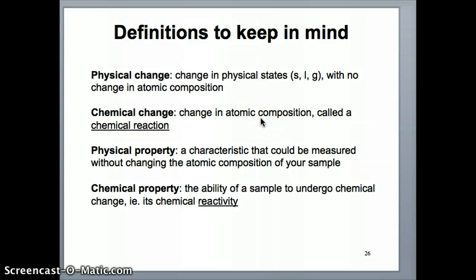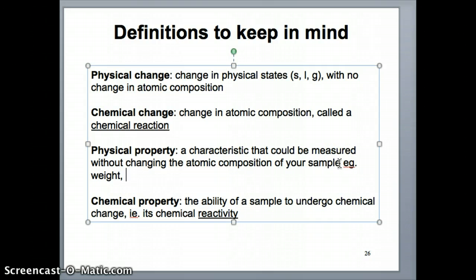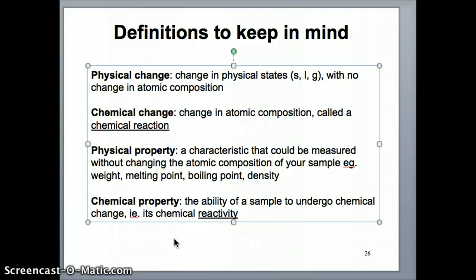We can also talk about physical versus chemical properties. A physical property is a property of a substance that you can measure without changing the atomic composition of the sample itself. For example, mass is something you measure without changing the atomic characteristics of your sample. You can measure its temperature when converting from solid to liquid, which is called the melting point, or the boiling point — the temperature at which the substance converts from liquid to gas. Density is another physical property; when you calculate density you're measuring mass and volume without changing the atomic nature of the substance. Gold is still gold.